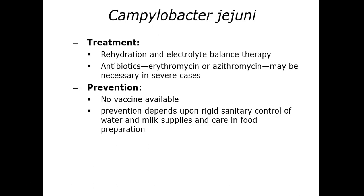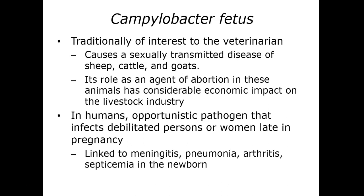Treatment includes oral rehydration therapy and antibiotics, and there is no current vaccine available. Prevention depends on pasteurization of milk and careful handling of food supplies during preparation. A secondary sequelae known as Guillain-Barré syndrome can occur as a long-term result of infection with Campylobacter jejuni. Campylobacter fetus is traditionally of interest to veterinarians because it is an STD in sheep, cattle, and goats, causing abortion in these animals with significant economic impact on the livestock industry.